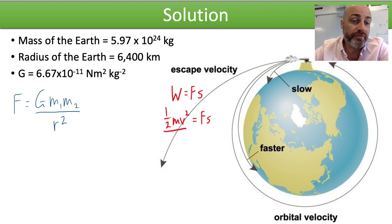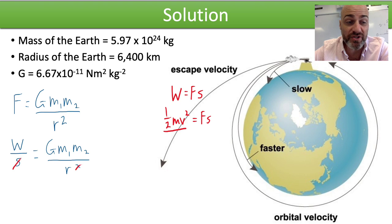So, starting with Newton's universal law of gravitation, what we can then do is substitute f for the work done over the distance and you'll notice that on the bottom of both of these equations, both in metres, they're both measures of distance. So, we can cancel out one measure of distance at the bottom of each equation.